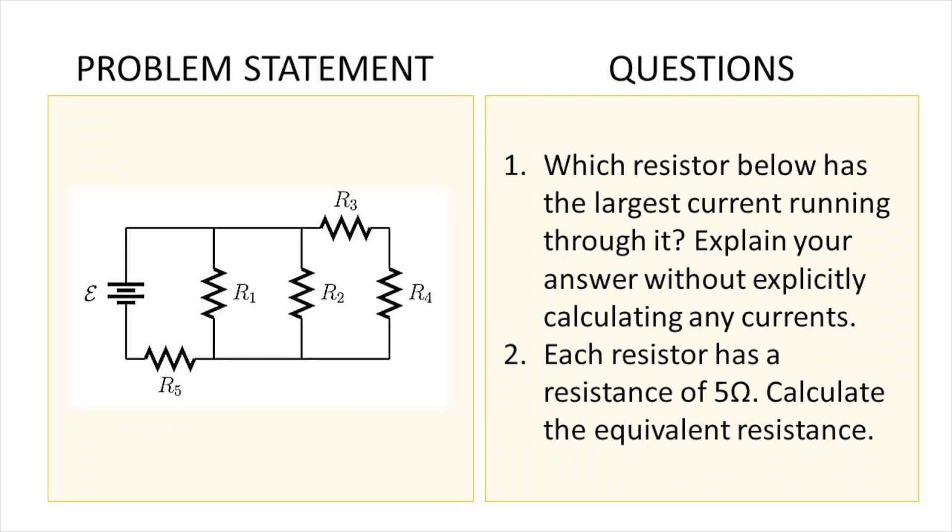So this is the problem that we're going to be working with. It's just a circuit with five resistors, and the two questions we have to answer are: which resistor has the largest current running through it, and also each resistor has a resistance of 5 ohms, calculate the equivalent resistance.